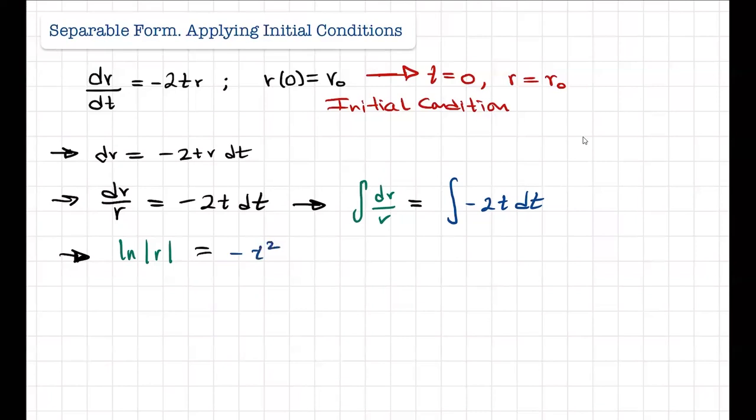And this is equal to the other integral. So negative 2t dt, that will be negative t squared plus C. And remember, both sides can have that plus C, but in order to save ourselves some time, we do it on the second one. So we continue with this. We're going to raise both sides to the exponent. This will be e to the natural log of r, which equals to e to the negative t squared plus C.